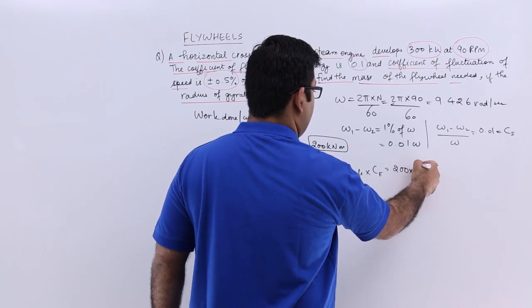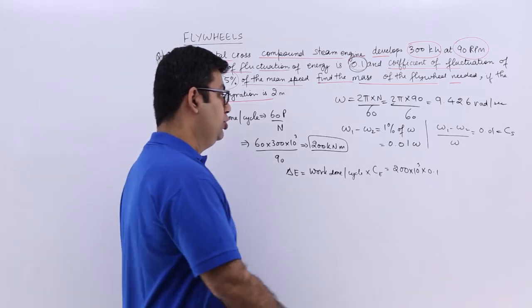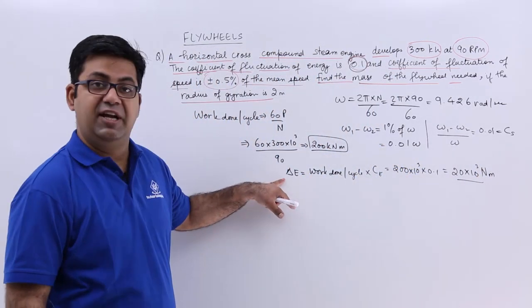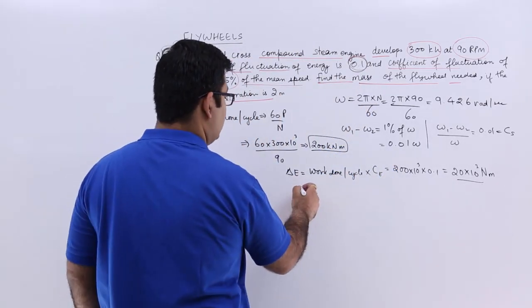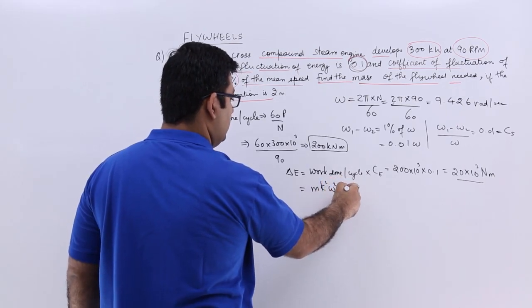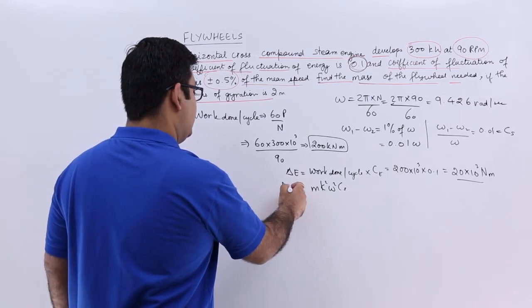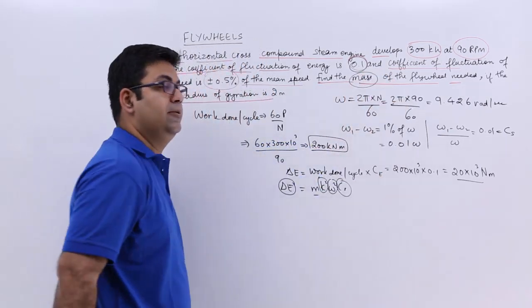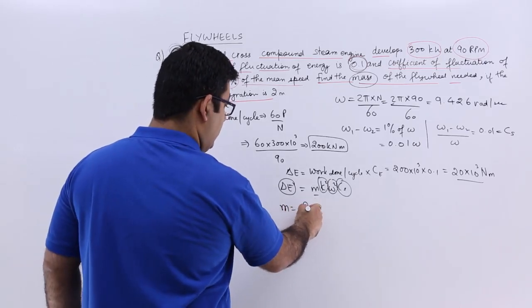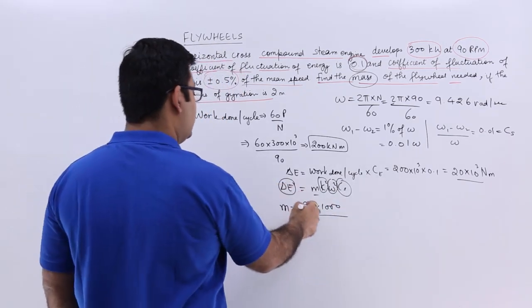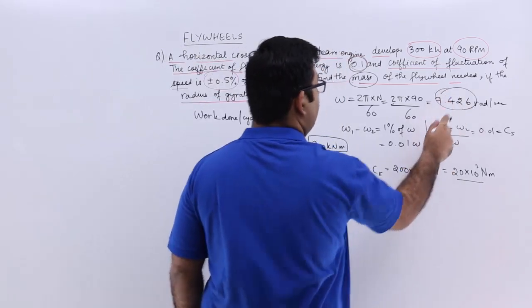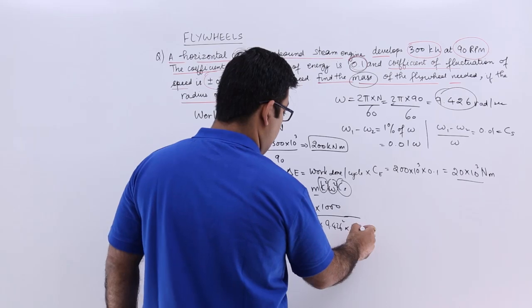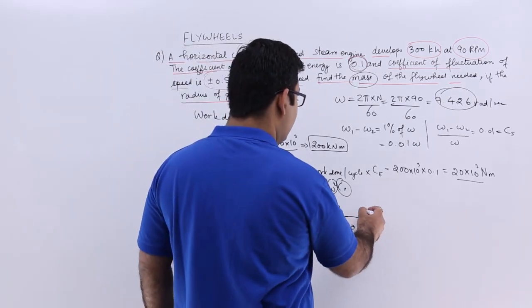This would be 200 into 10 to the power 3 into 0.1. So this would be 20 times 10 to the power 3. To find the mass of the flywheel required, m would be 20 into 1000 by k squared, which is 4, into omega squared, which is 9.426 squared, into c_s, which is 0.01. This would give you the mass in kg, which is 5630 kg. So this is the mass of the flywheel needed.